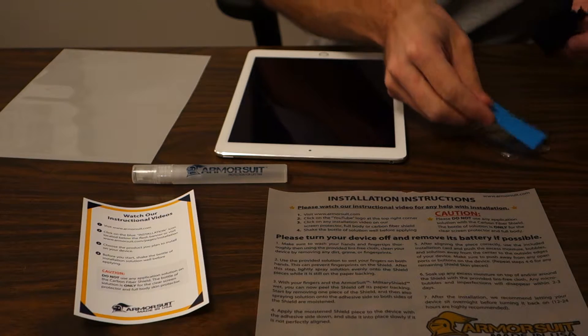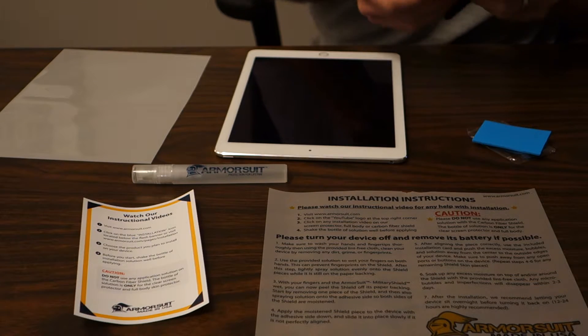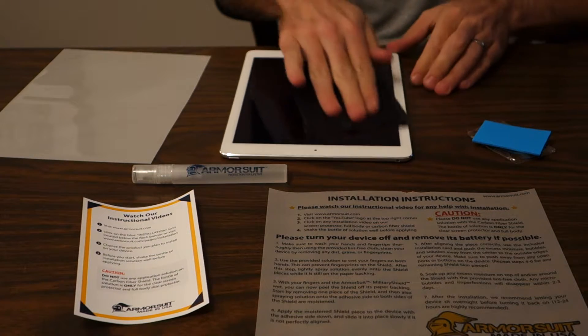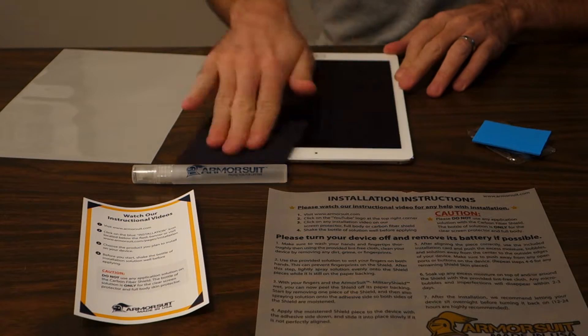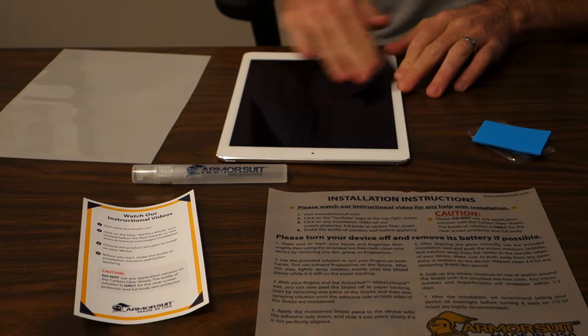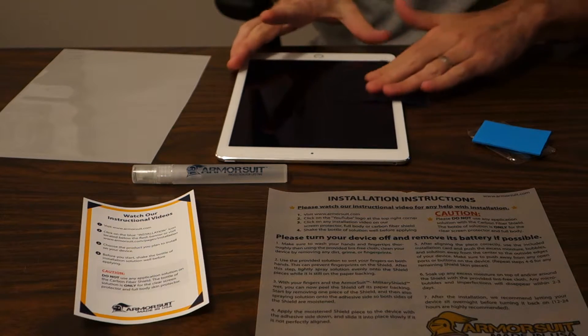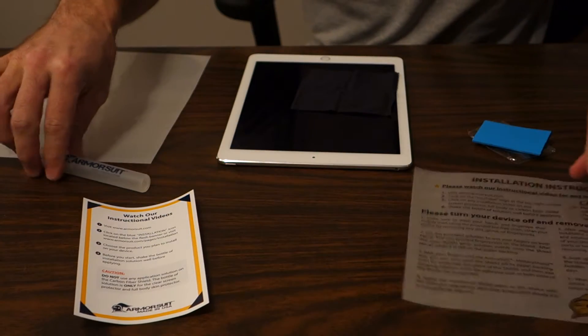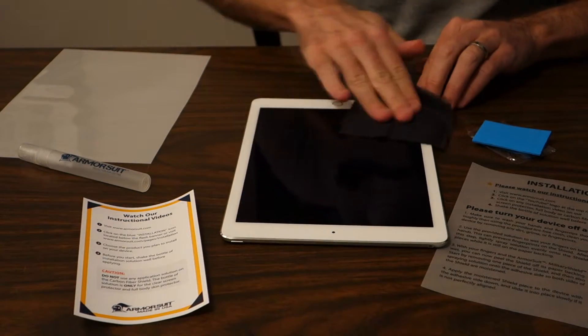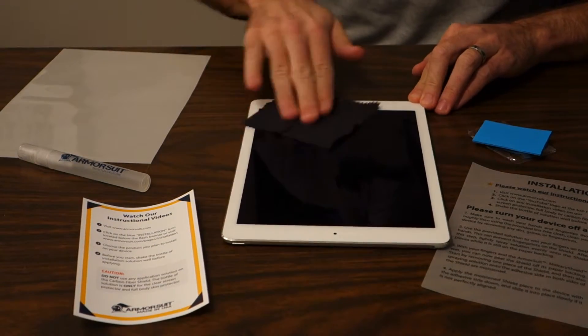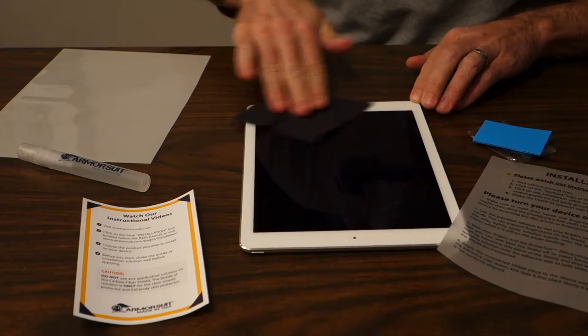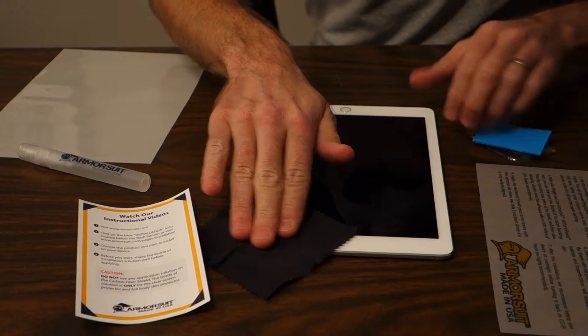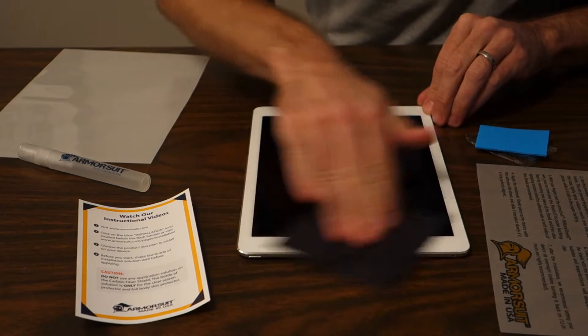Surprisingly, in the video they said just to clean the screen with the cloth. Didn't say to use any alcohol wipes or anything like that. And as I'm wiping it here, it actually seems to be doing a good job getting rid of those fingerprints. It does say to wash your hands well and use a clean area to do it. All right, that looks good.